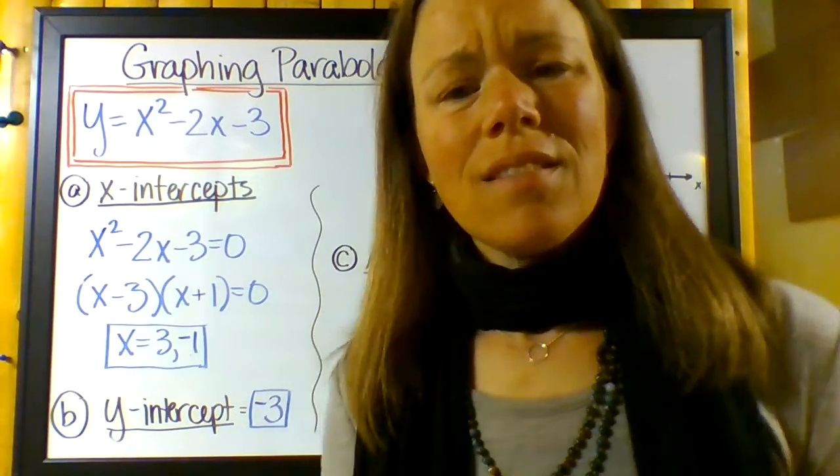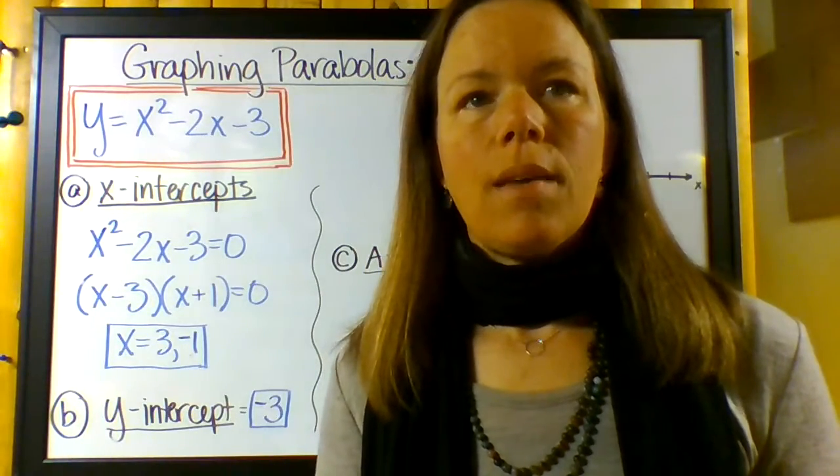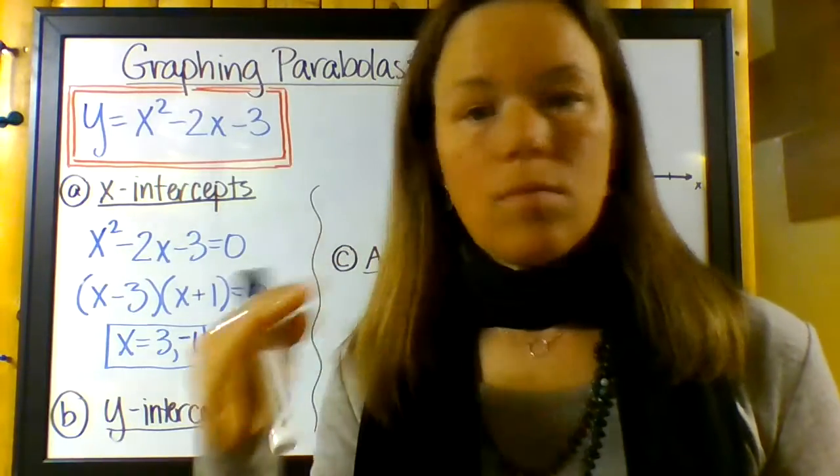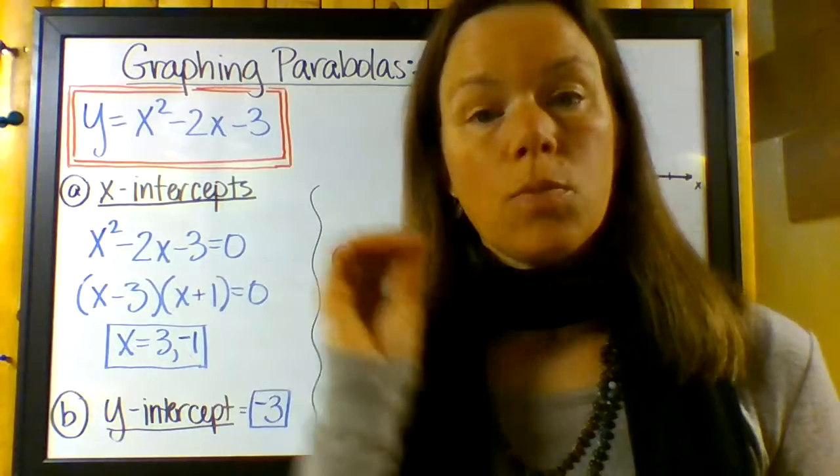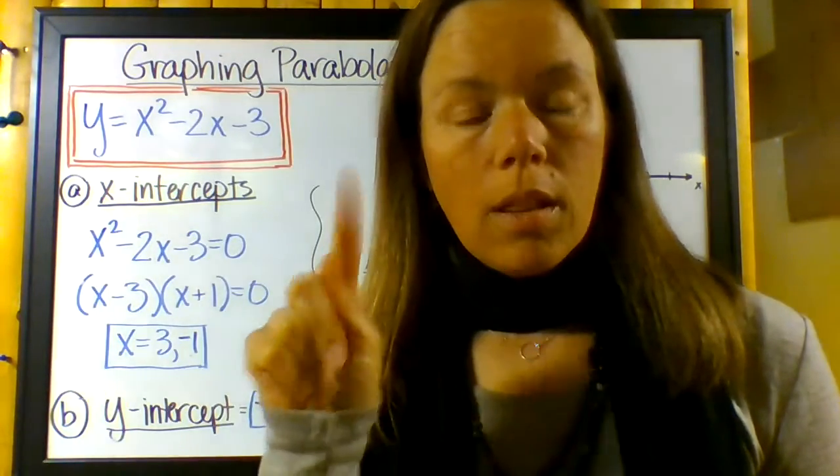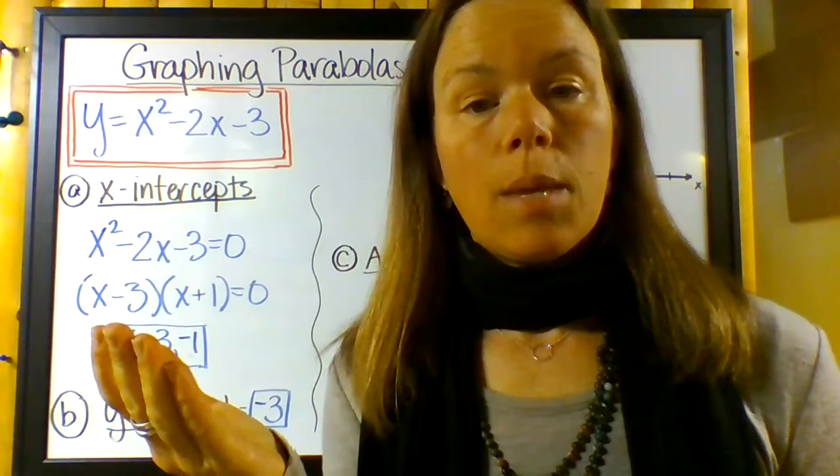So I've got a step-by-step method for graphing parabolas that takes a look at a lot more of the equation than just plugging in a table of values. It gets much more specific and gets to where that parabola lies on the graph more quickly than just randomly plugging in a table of values.